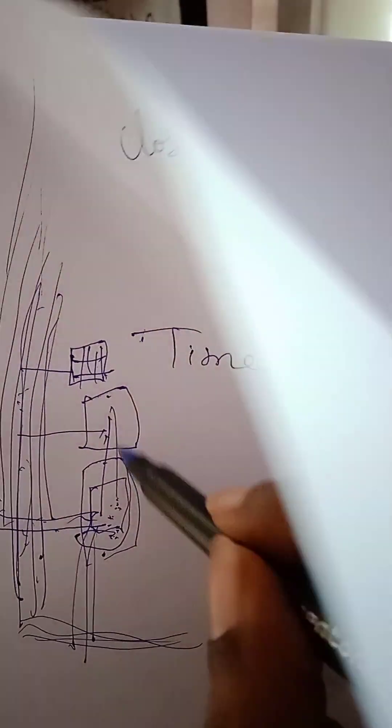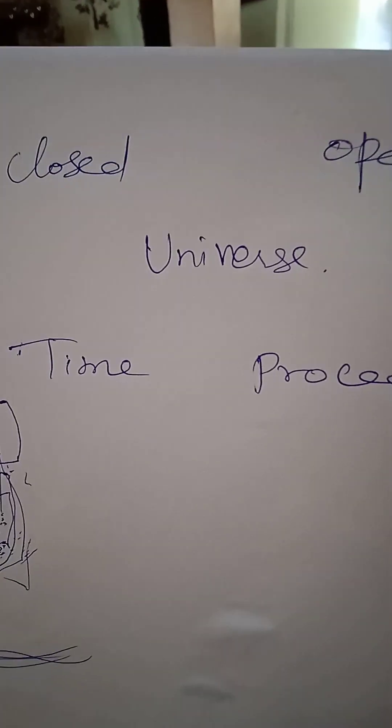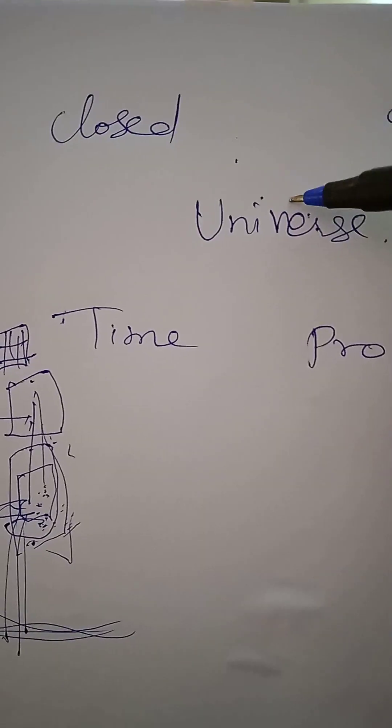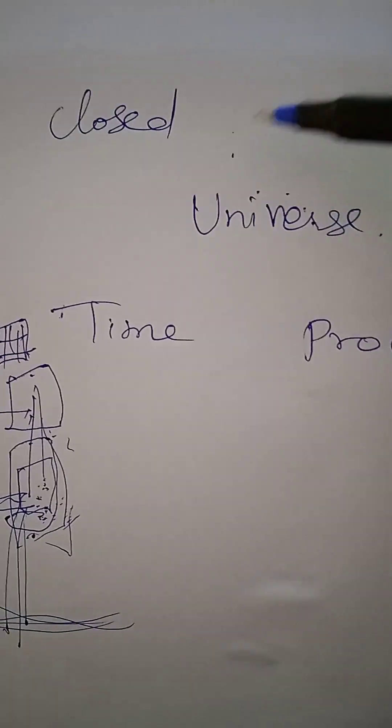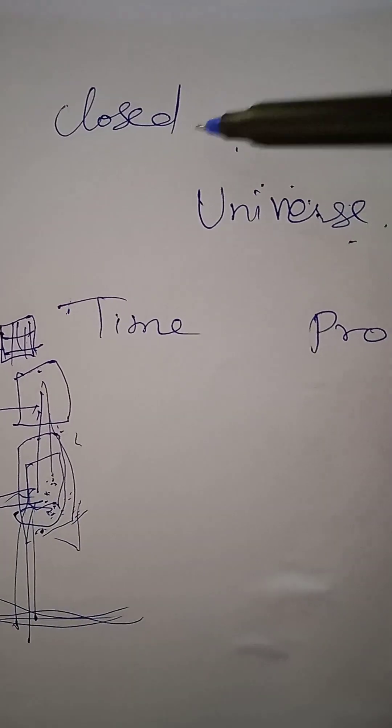Now let's go to our closed universe. We can look at the table. This is the flow and the table. In the closed universe,